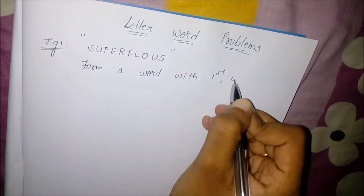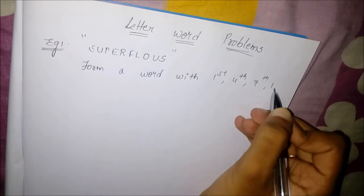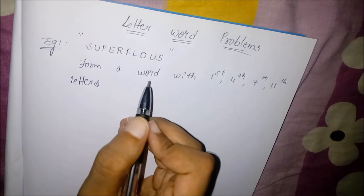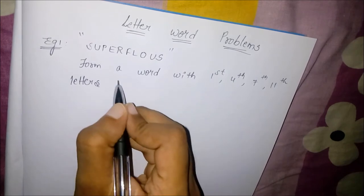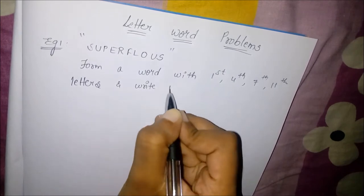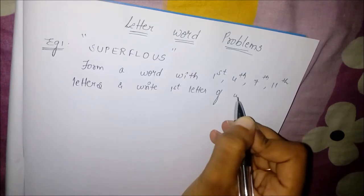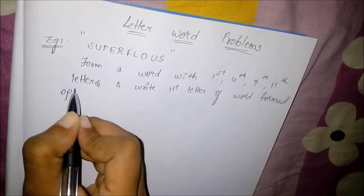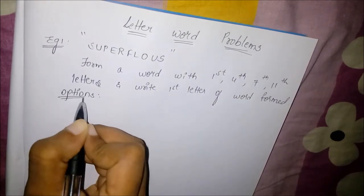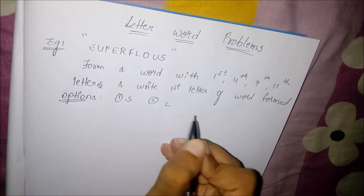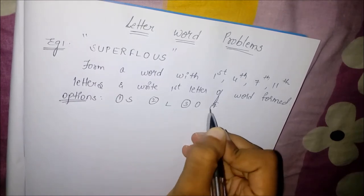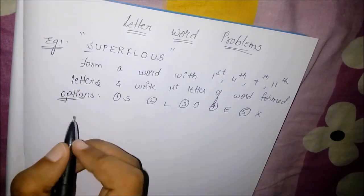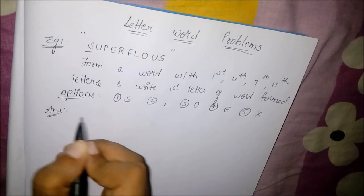So we have to form a word with the first, fourth, seventh, and eleventh letters from the given word, and from that formed word we have to find out the first letter. The given word is shown in inverted commas. Coming to the options: the first option is S, second is L, third is O, fourth is E, and fifth is X.